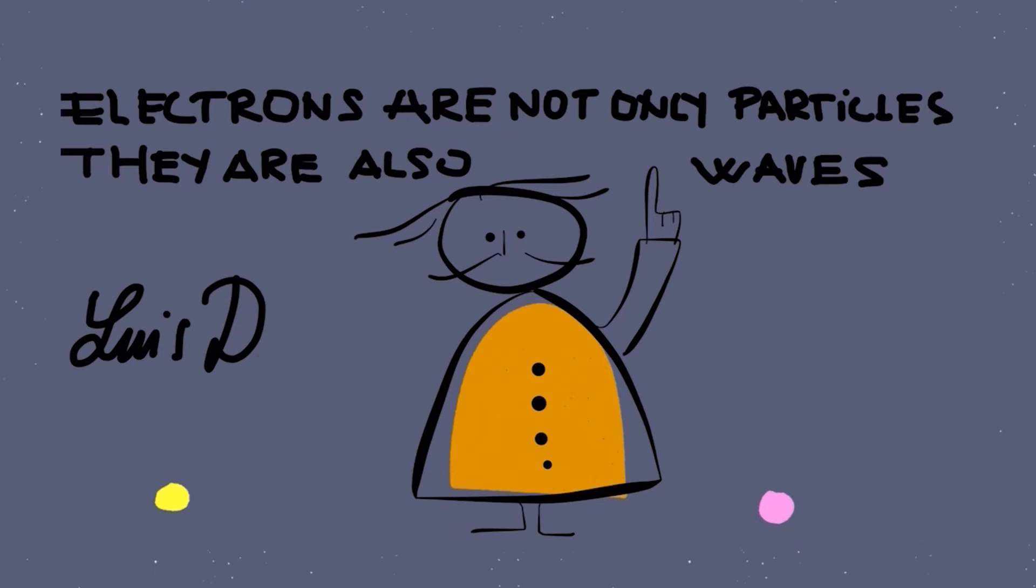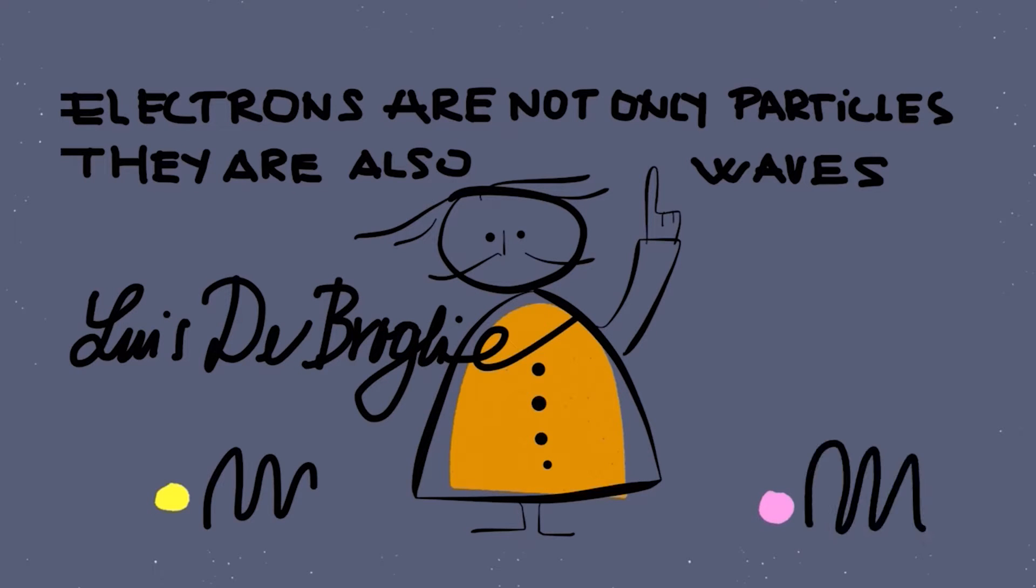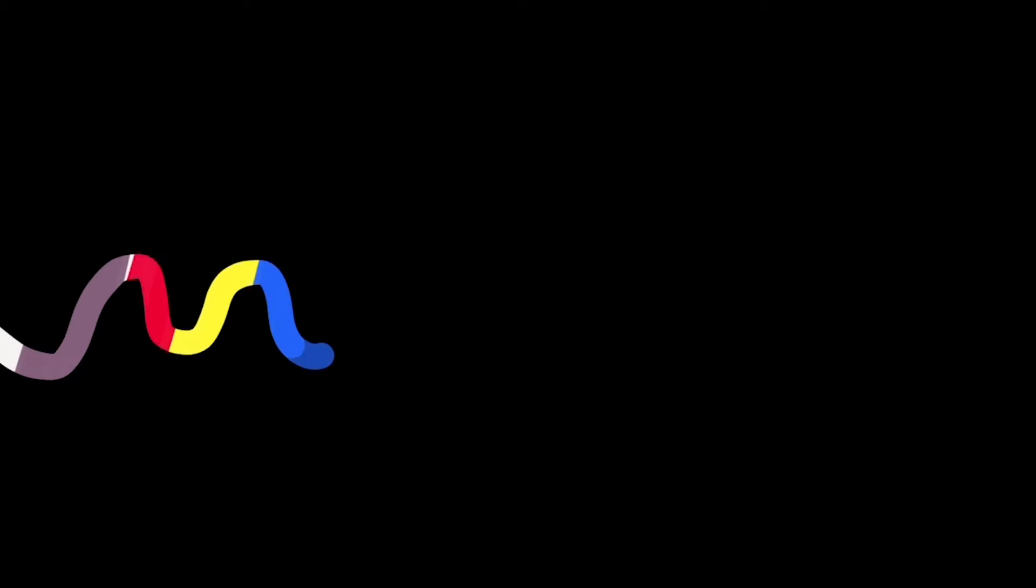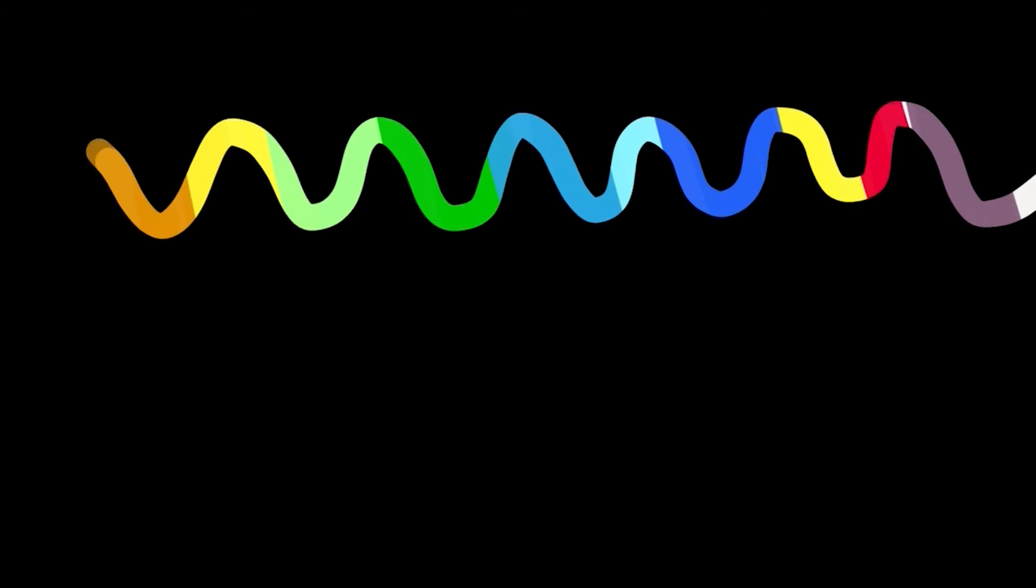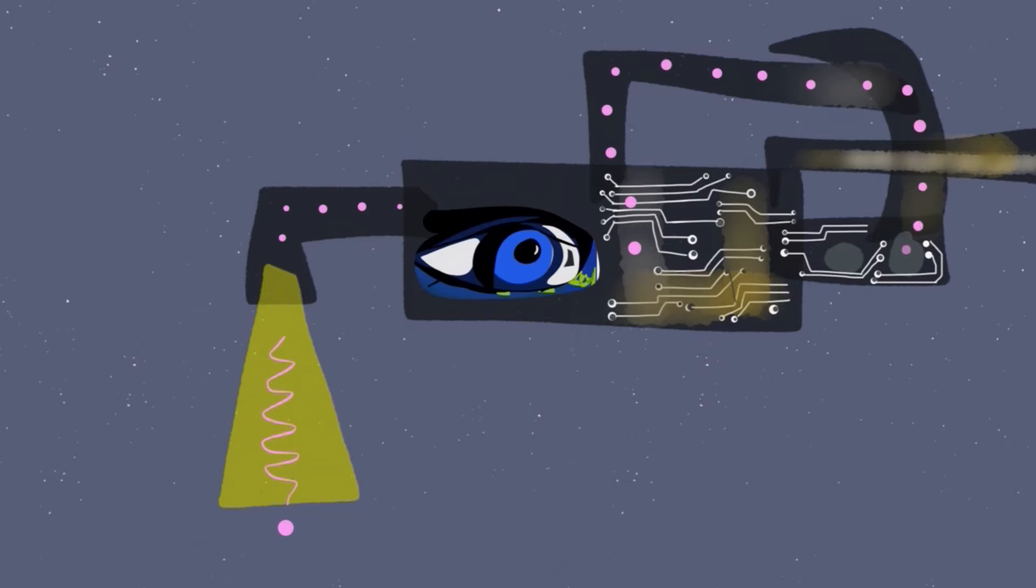Even better, the faster the electron moves, the shorter is its wavelength. Now we have a wave which is both fast enough and short enough to image the microworld. We ask the inhabitants of the microworld to take their own pictures and send us the movie.